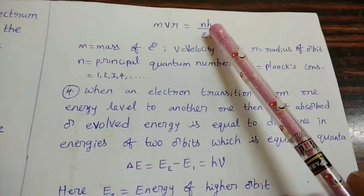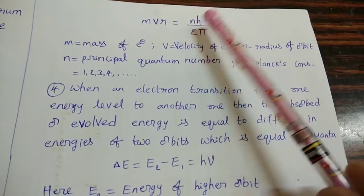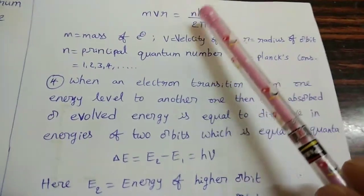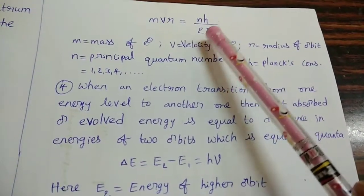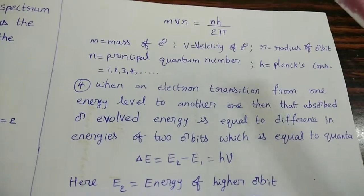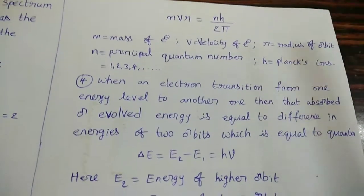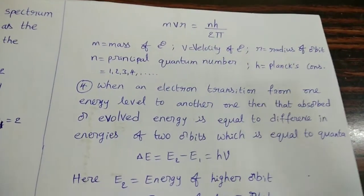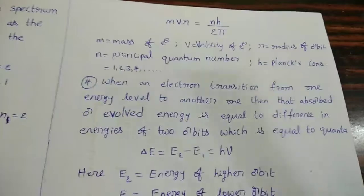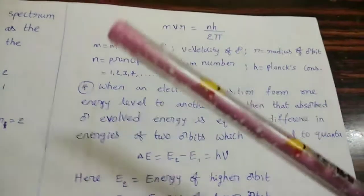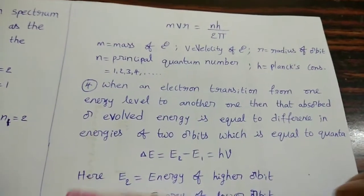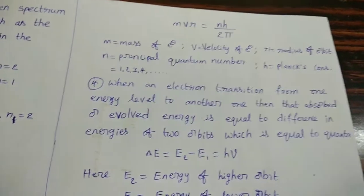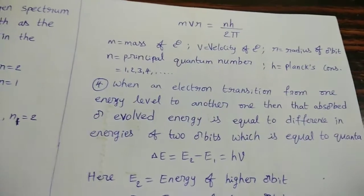Taking n = 1: h/2π; n = 2: 2h/2π; n = 3: 3h/2π; n = 4: 4h/2π — these are integral multiples of h/2π, and electrons are present only in those orbits. This means the angular momentum of the electron in the atom is also quantized — quantized means having a particular value. Here m is the mass of the electron, v is its velocity, r is the radius of the orbit, and h is Planck's constant.